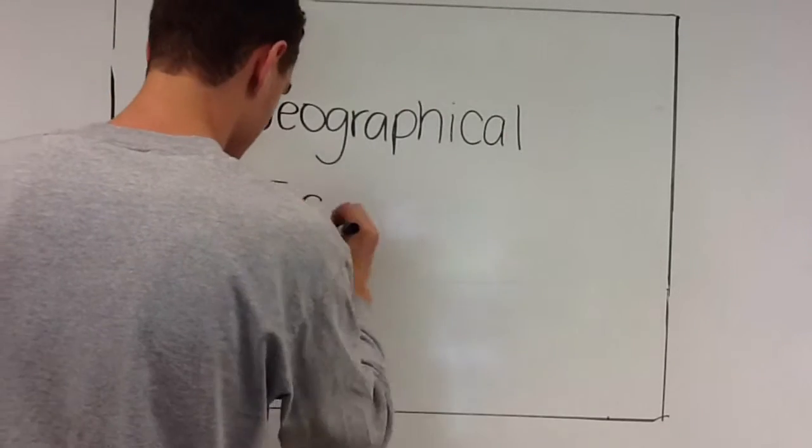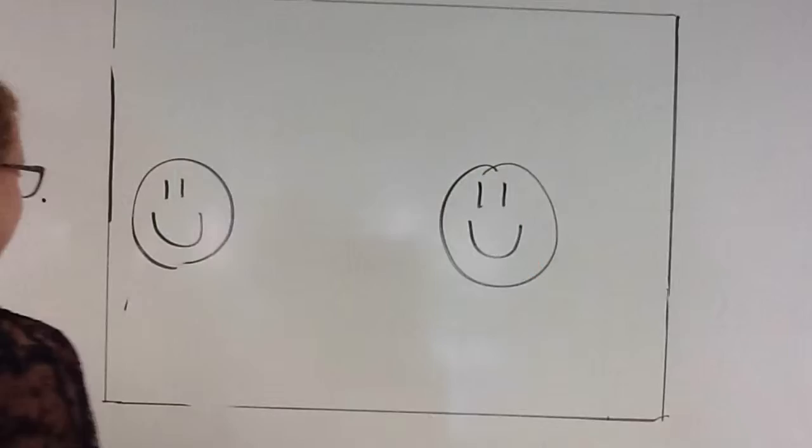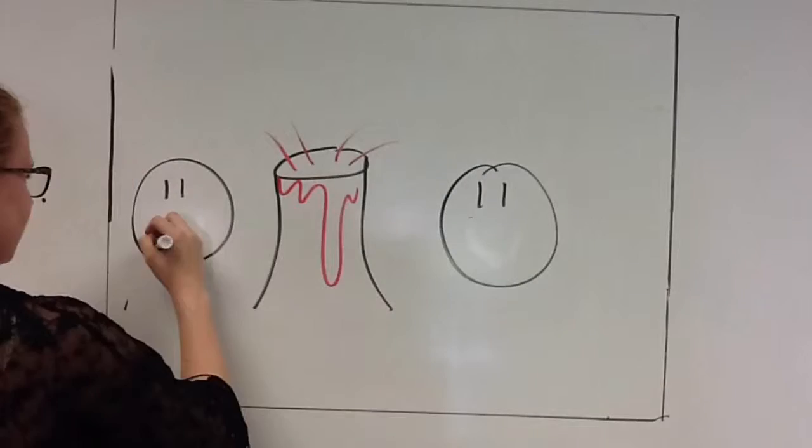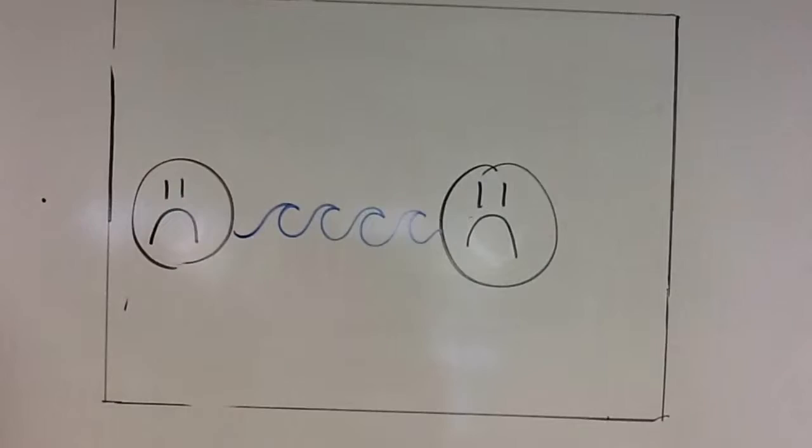Geographical isolation happens when a physical barrier separates the two species. For example, two organisms of the same species live in a specific area. However, a volcano erupts nearby. Now, because of the natural occurrence, the organisms are separated into two groups and will eventually develop into different species and be unable to mate.